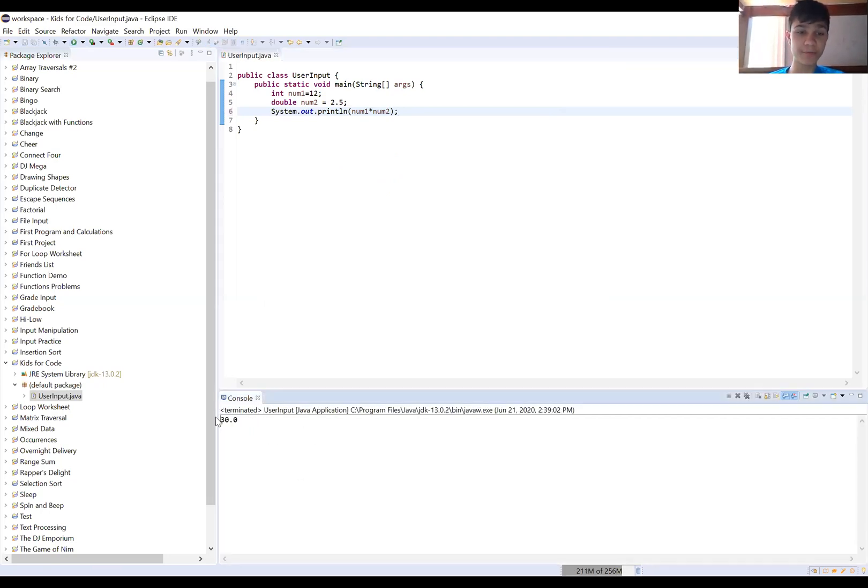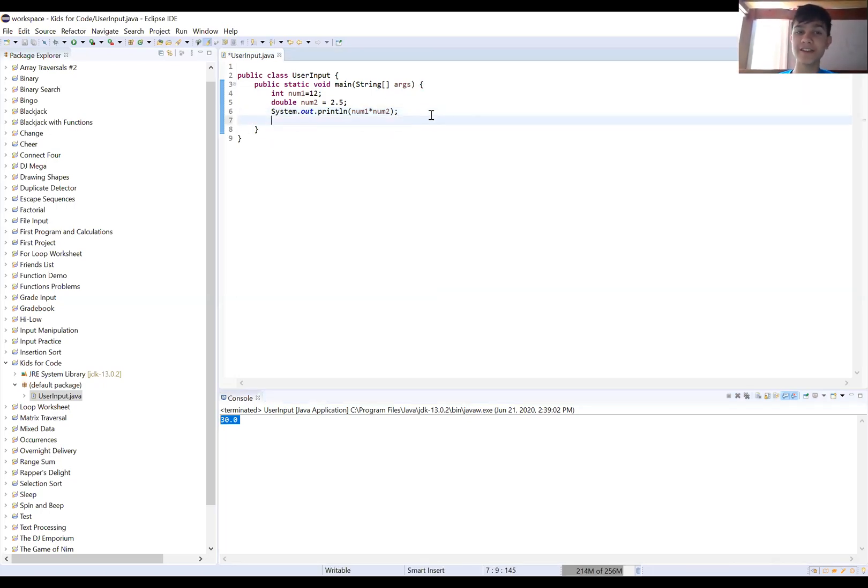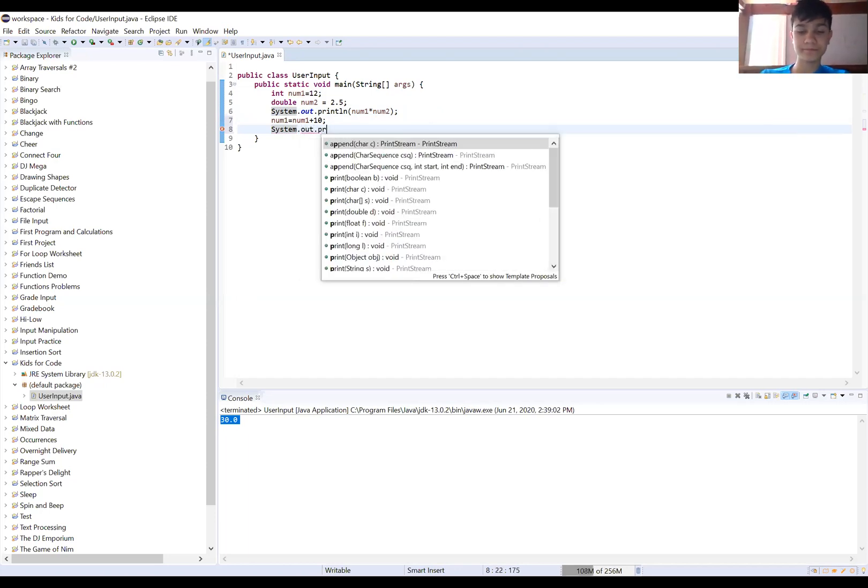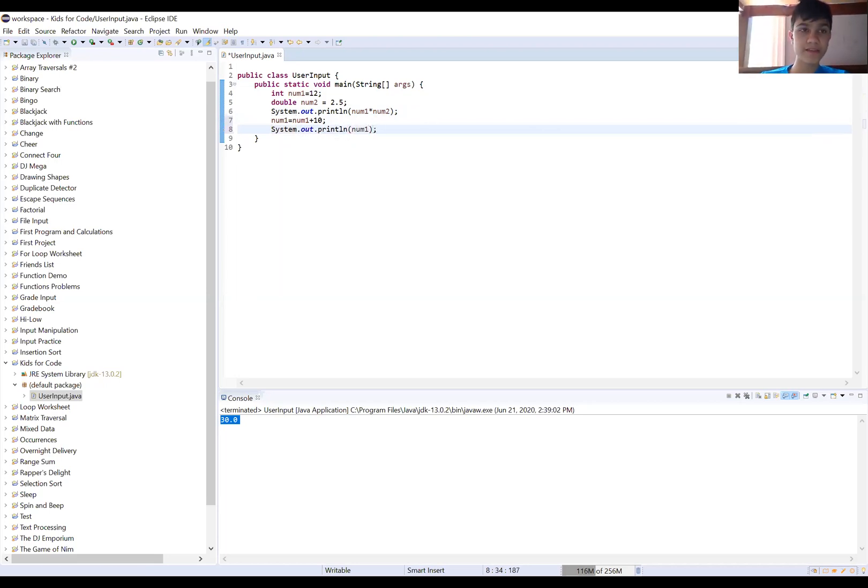So the result is a double. The double is a whole number but it still is a double because we're multiplying a double by an integer. Let's say we want to update num1 and change the value. We can use the statement num1 equals num1 plus 10. Then let's print out the value of num1 to see how it got changed. The first line is the result of our previous calculation, but the second line is the result of updating num1. As you can see, it's 22 because we're taking the existing value of num1, which is 12, and adding 10 to it. From now on, if we were to use num1 again, the value of it would be 22.